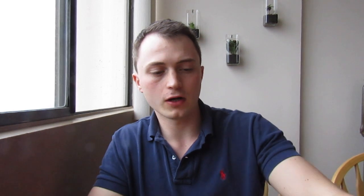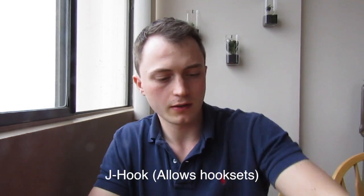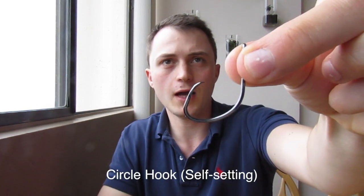And right now because it's still a little bit cooler, we use five odd hooks, so there's either the J hook or the circle hook. I prefer using the J hook because with the circle hook, the fish has to take the bait, swim away, and the hook sets itself.